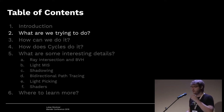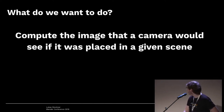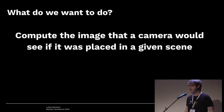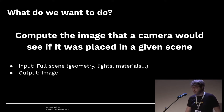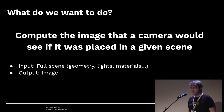What are we trying to do? Before we develop solutions we need to know the problem. We want to compute the image that a camera would see if it was placed in a given scene in the real world. The renderer receives the full scene including geometry, where the lights are, which materials there are and so on. The renderer does not care about things like armatures or modifiers. The output of the renderer is an image.